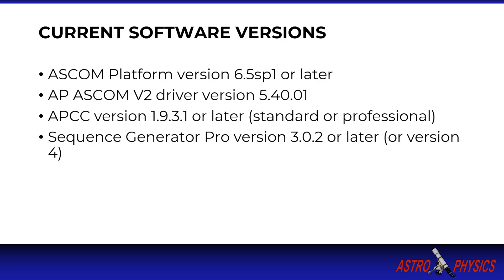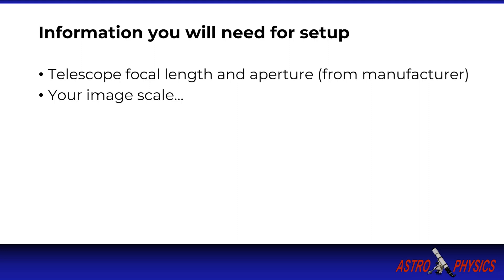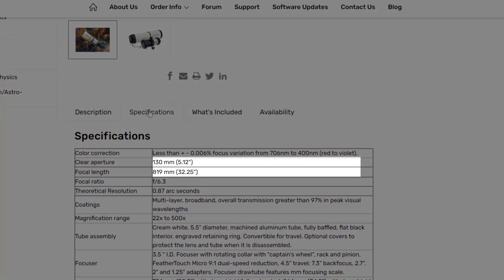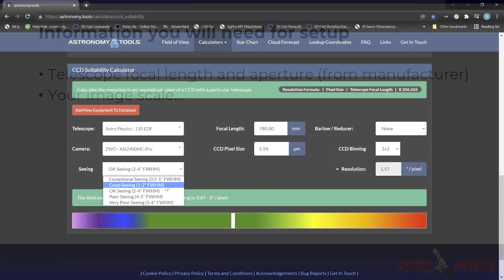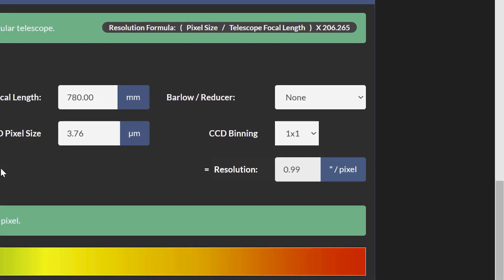If you use APCC, you can use either the standard or the professional version. Prior to starting, you will also need a few additional bits of information for setting up Sequence Generator. You will need your telescope focal length and aperture, which is typically available from your telescope manufacturer's website under specifications. You will also need your imaging telescope's image scale, which can be calculated using any one of a number of field of view calculators online. The link to an example calculator is in the description below.